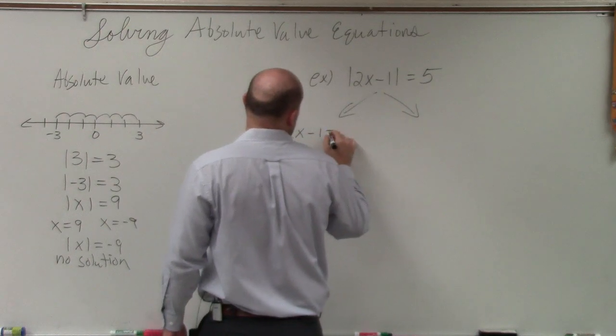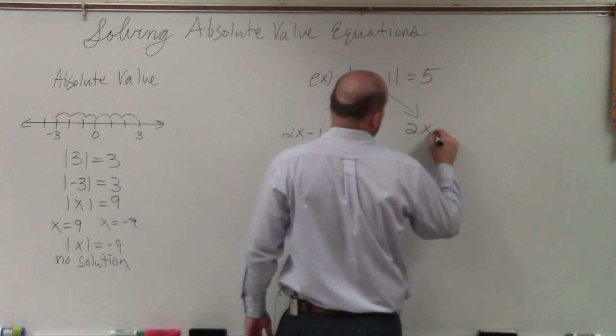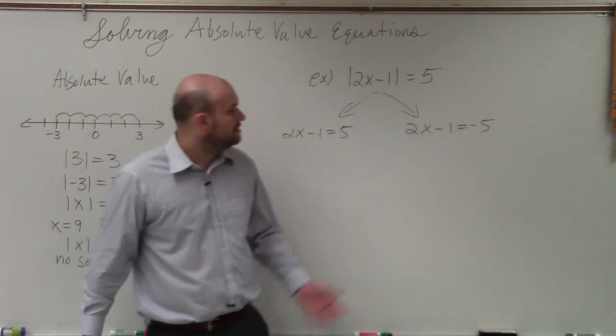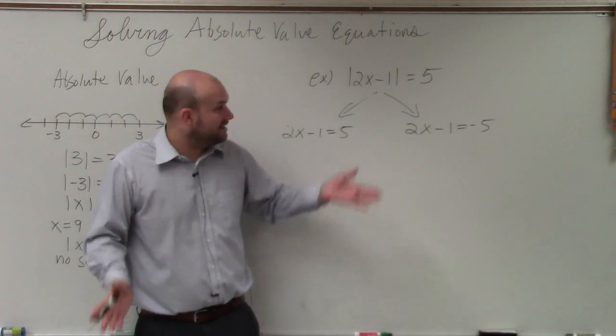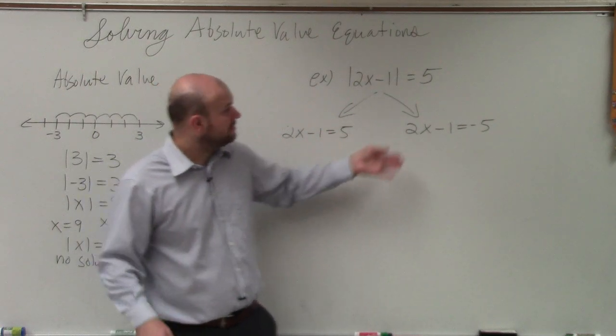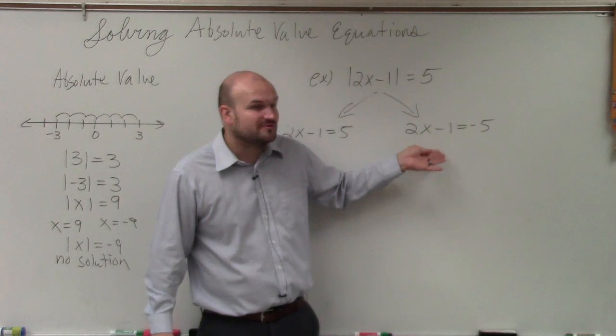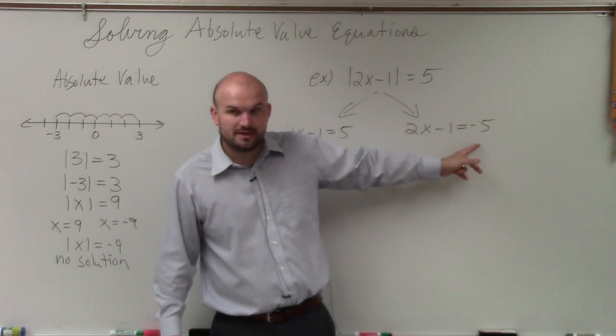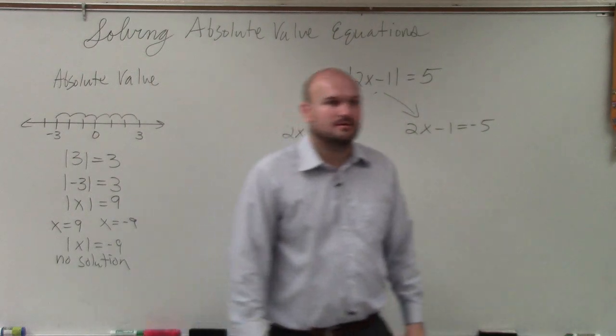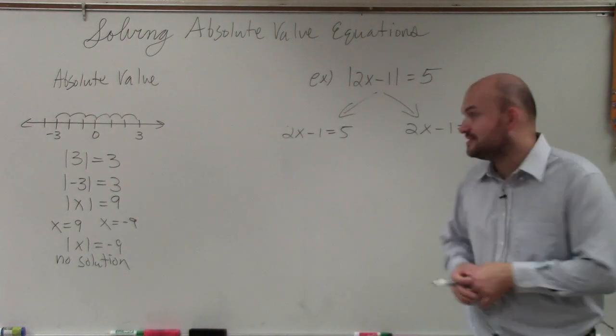We say 2x minus 1 equals 5 and 2x minus 1 equals negative 5. So basically all you're doing is rewriting the equation with no absolute value, then you negate the other side, which means make it negative. All right? And now we just get to the fun stuff where we solve.